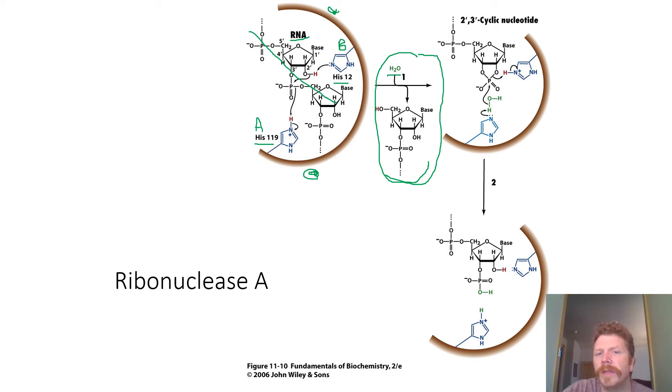Okay, now if you look at the movement of these electrons, histidine 119 serving as our base is going to pick off this hydrogen from our hydroxide group on carbon two prime. Okay, whenever it picks that proton off the electrons that are within the bond from oxygen to hydrogen, they are going to move down to form a bond with our phosphate group.